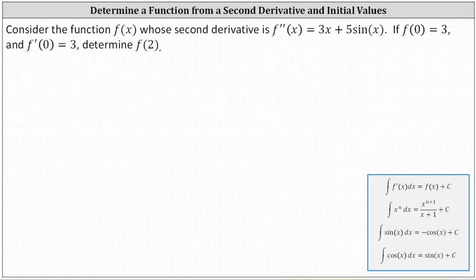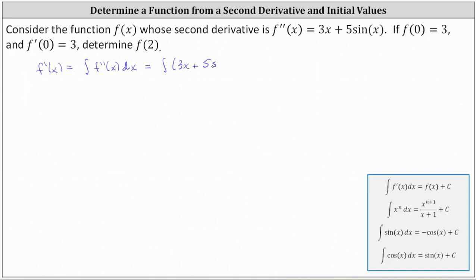In this problem we're given the second derivative and we can recover the first derivative by determining the antiderivative or indefinite integral of the second derivative. Meaning f prime of x is equal to the indefinite integral of f double prime of x dx, which in this case would give us the integral of three x plus five sine x dx.